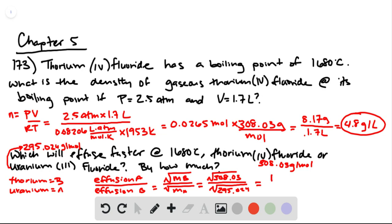This gives us 17.55 over 17.18, which tells us that the effusion rate of the uranium-containing compound is 1.02 times faster than the thorium compound.